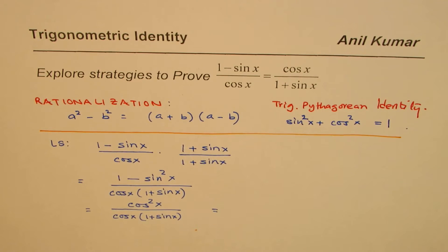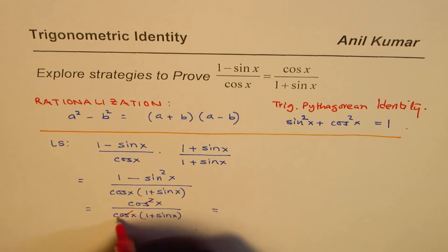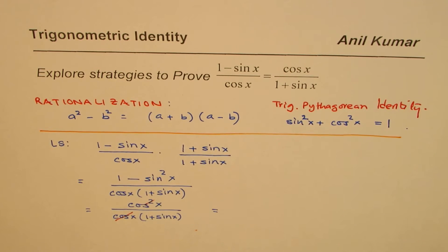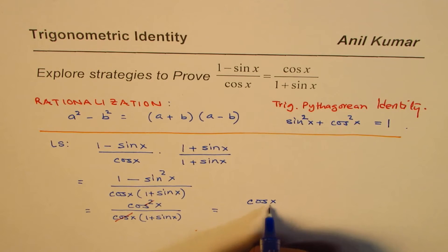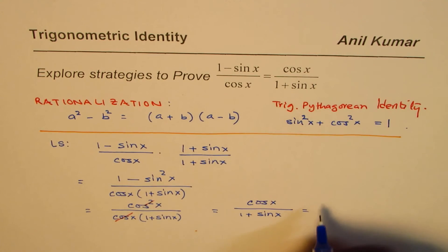Now, as you can observe, one of the cos x can be cancelled. And what we get here is cos x in the numerator and 1 + sin x in the denominator. That is what we wanted - that is the right side.